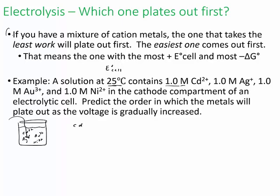We'll write half reactions and then compare them. Cd²⁺ plus 2 electrons makes solid Cd. Silver: Ag⁺ plus 1 electron makes solid Ag. Gold is going to require 3 electrons: Au³⁺ plus 3 electrons makes solid Au. And nickel: Ni²⁺ plus 2 electrons makes solid Ni.